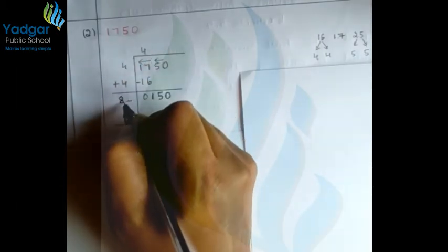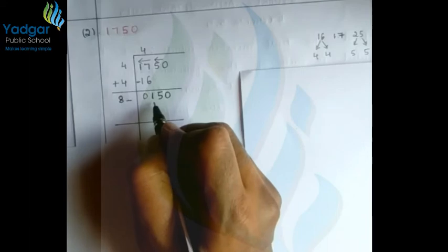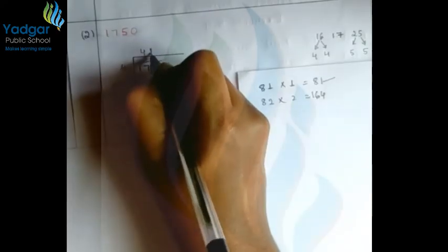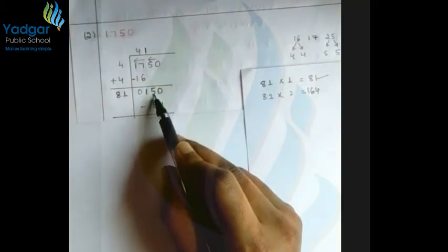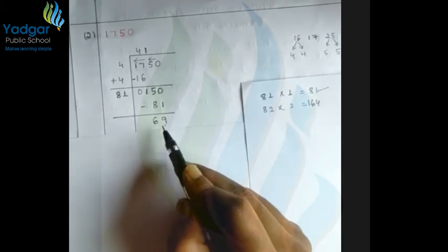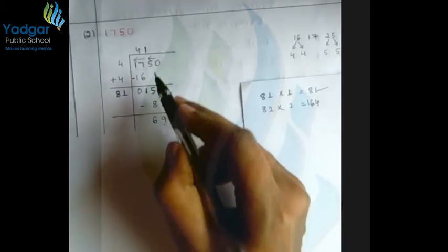By multiplying which two numbers do we get the number nearest to 150? We try 81×1=81, 82×2=164, 8×16... Checking: 81×1=81. By subtracting 81 from 150, we get remainder 69. Don't worry about the remainder — we proceed to the next step.